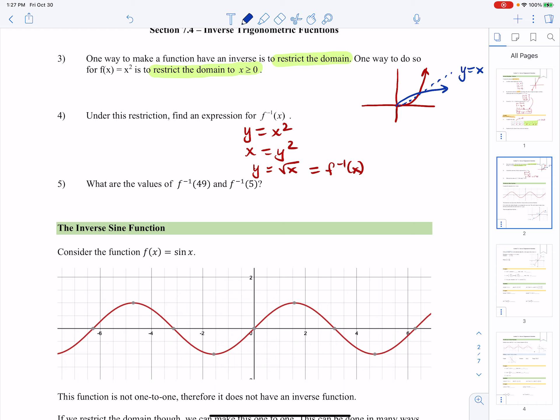So with that said, what is f inverse of 49? Well, I know that f inverse is the square root function. So f inverse of 49 is 7. And f inverse of 5 is, well, the square root of 5. So there we have it.